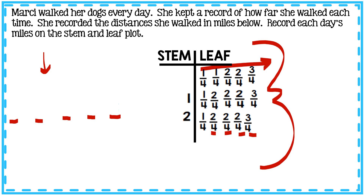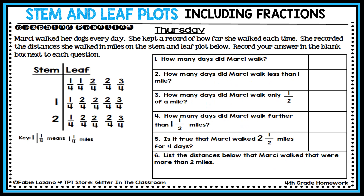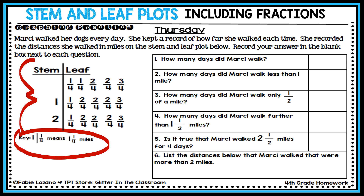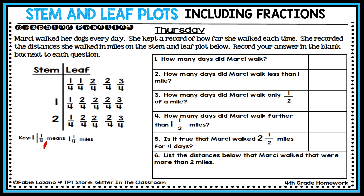Now let's answer some questions using the stem and leaf plot we just built. Pay attention to the key — it's very important. If I have a whole number on the left and a fraction on the right, it means I have, for example, one and one-fourth miles. The problem tells us Marcy walked her dogs every day and recorded the distances in miles. Let's start with question one: how many days did Marcy walk?